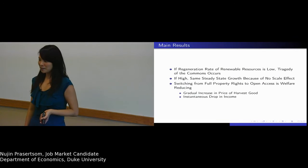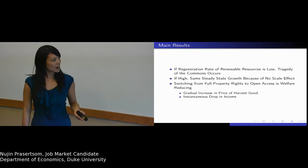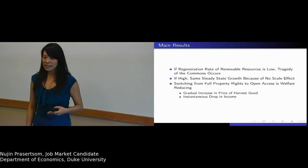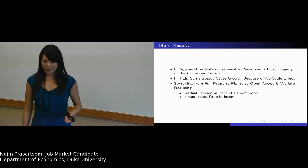The main result of this model is the regeneration rate of renewable resources is low. For example, if the fish regenerate very slowly,